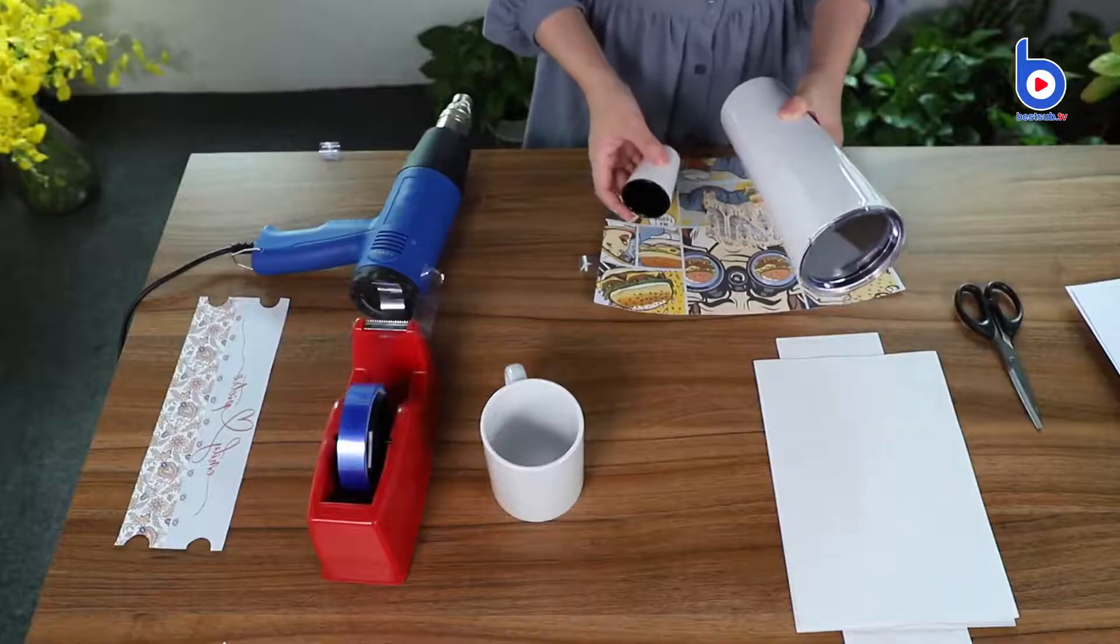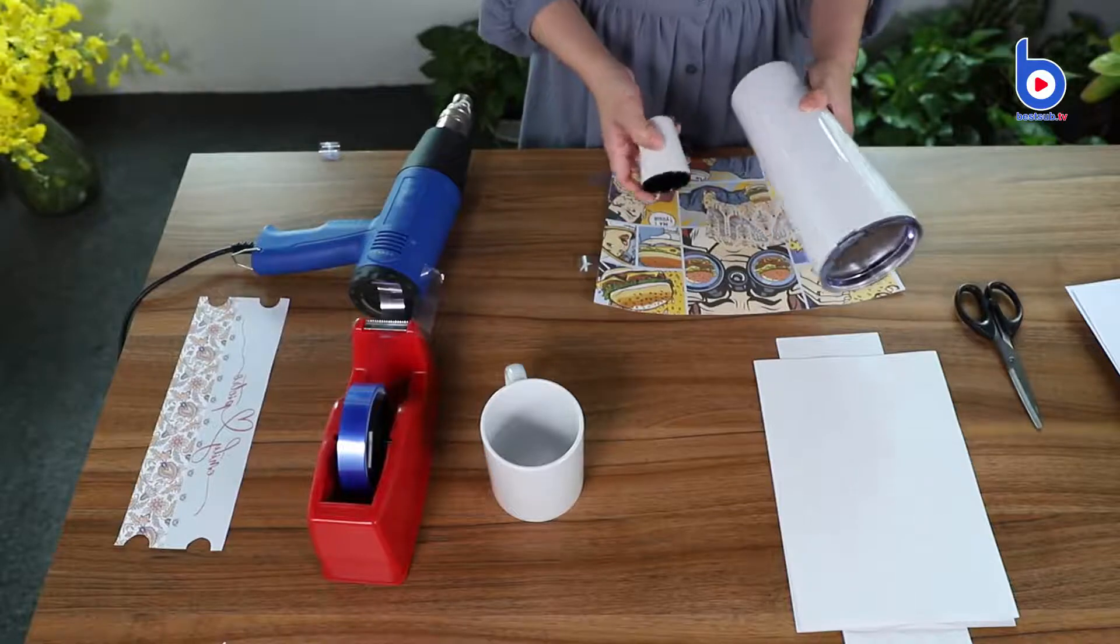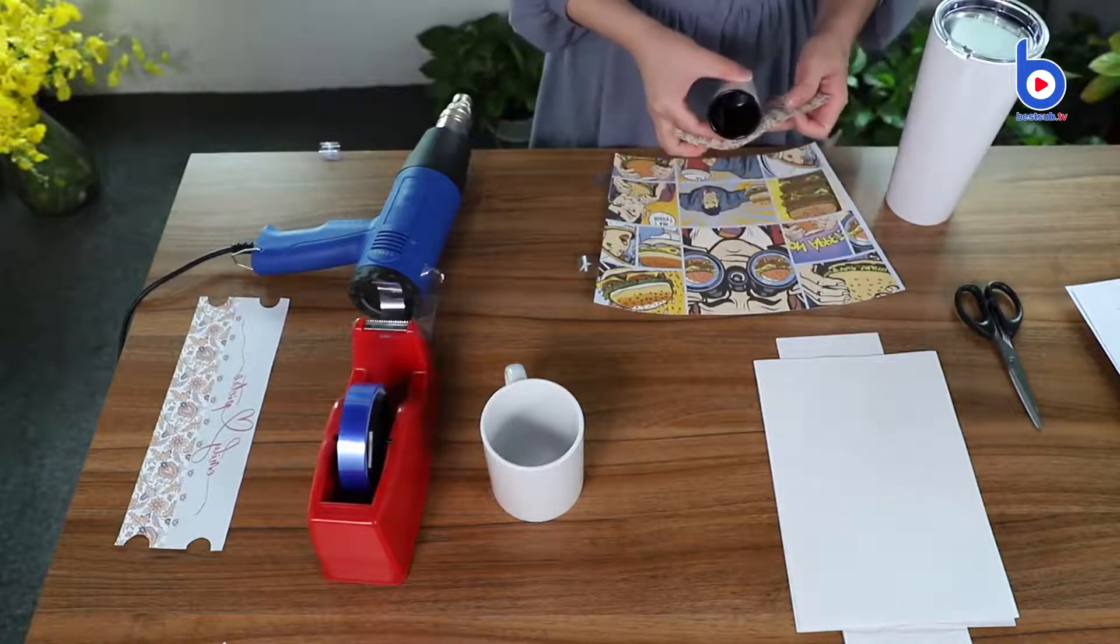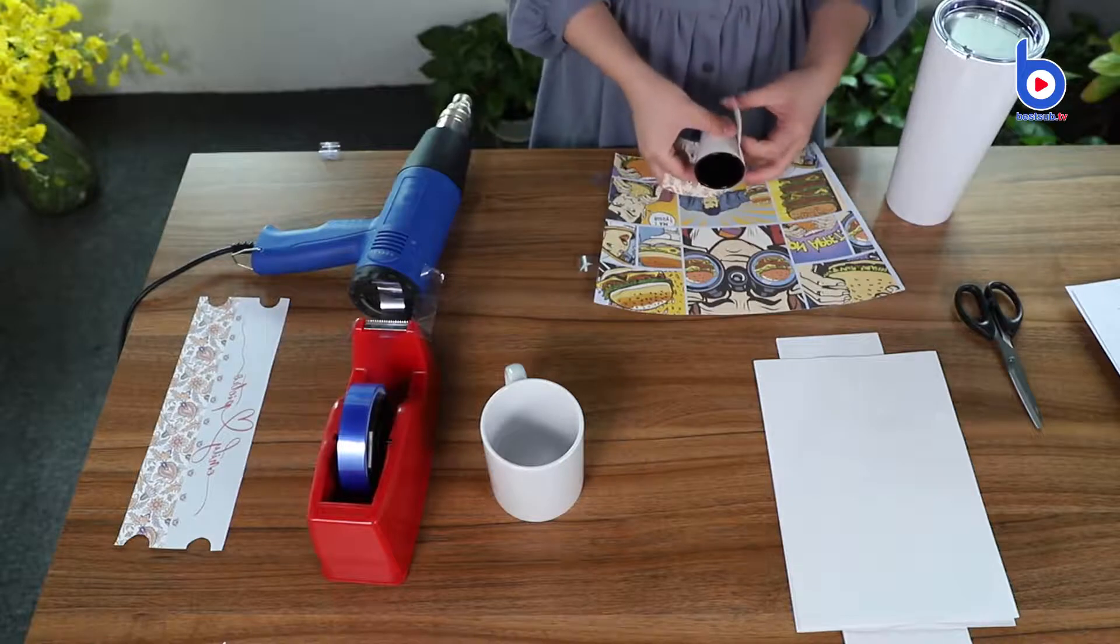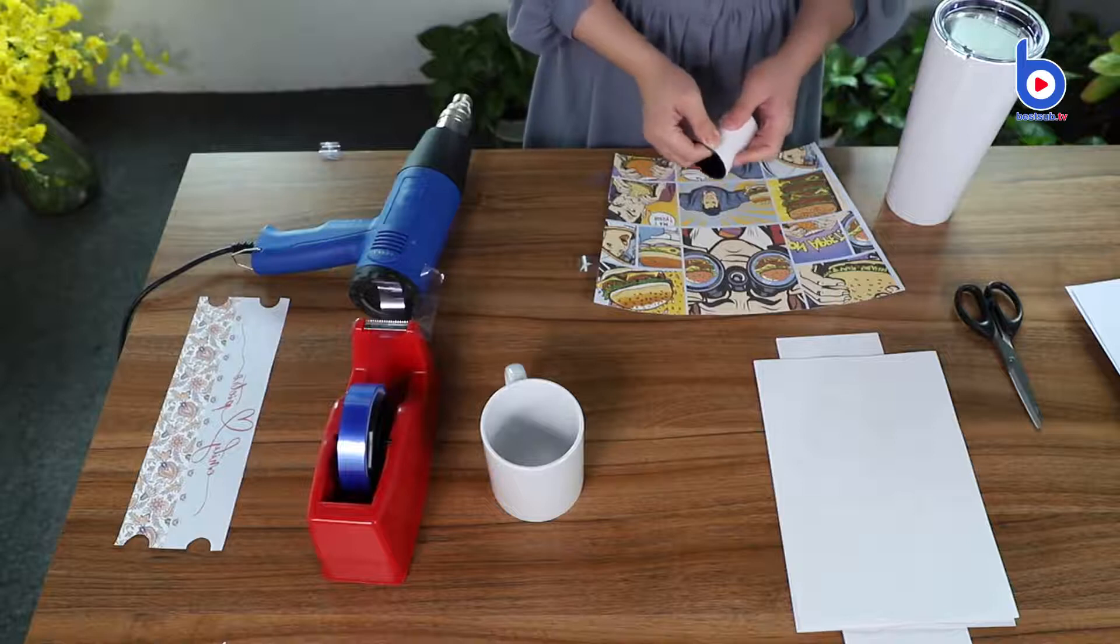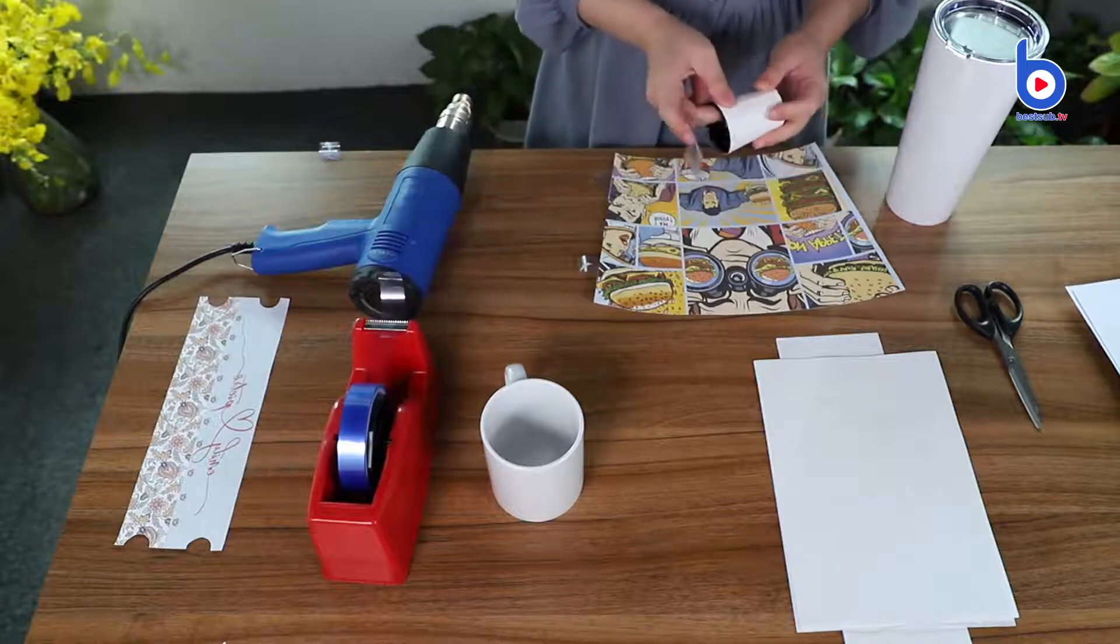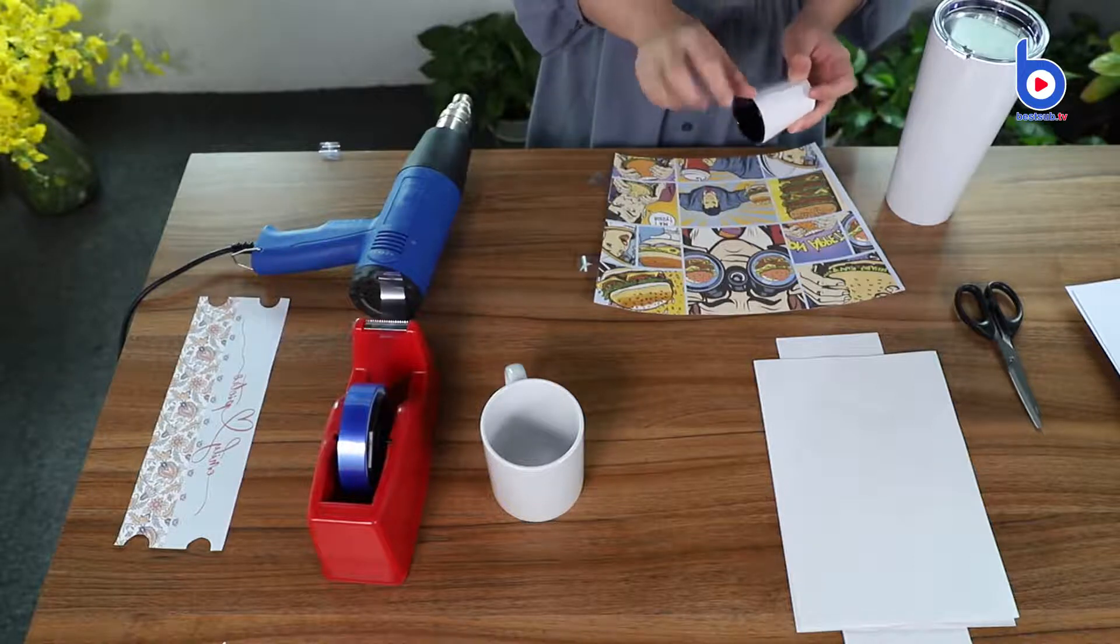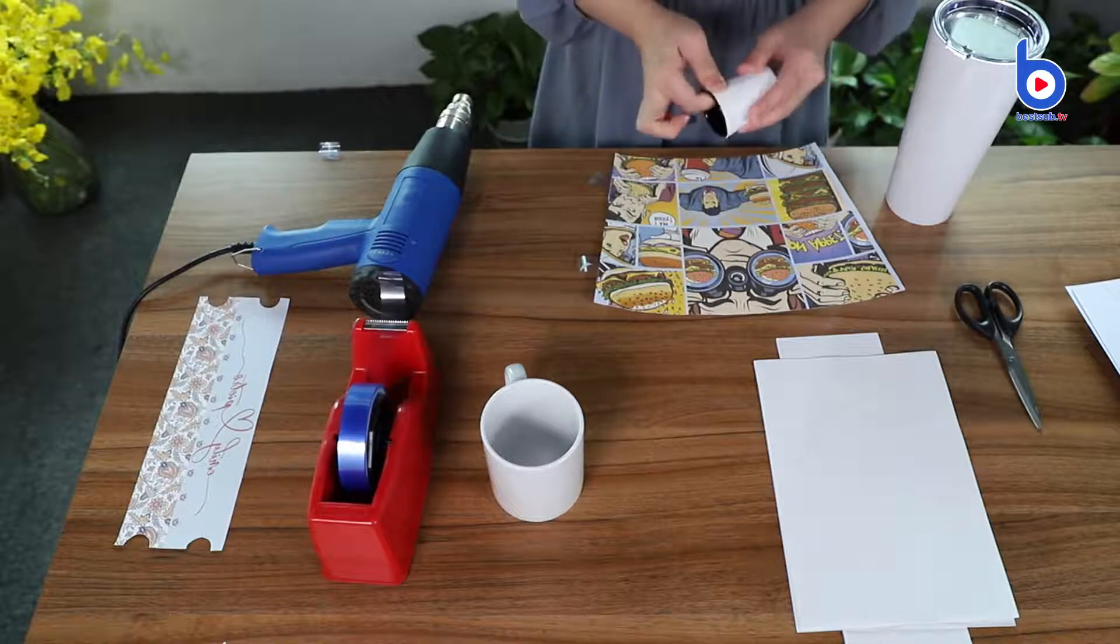I'm going to print the large tumbler and the little short glass first. The first step to print these two stainless drinkware is easy. Just wrap them with the images and fix the images with tape.